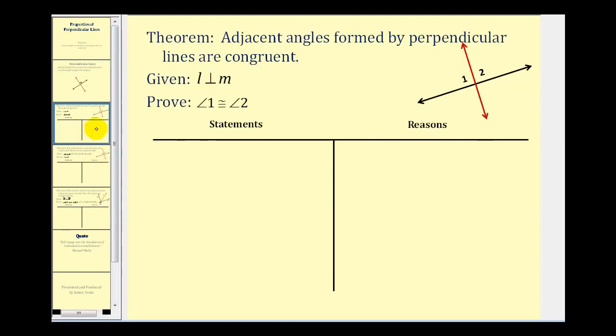Let's take a look at our theorem. The theorem we want to prove is that adjacent angles formed by perpendicular lines are congruent. We're given that line L is perpendicular to line M. We want to prove angle 1 is congruent to angle 2.